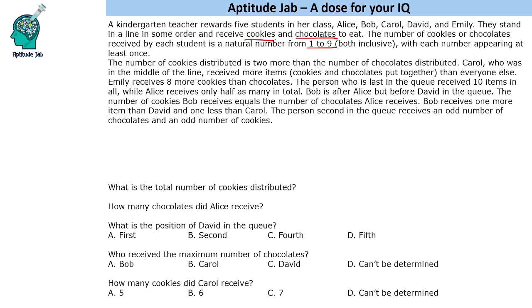We have five students and they receive chocolates and cookies. So they receive 10 items in total, and the digits one to nine will each appear at least once. That means one digit will repeat out of these nine digits.